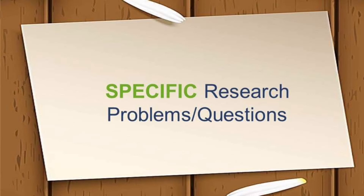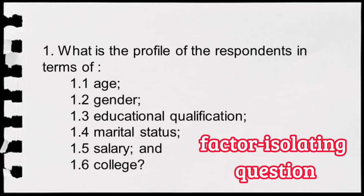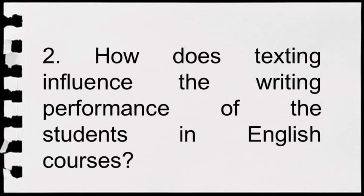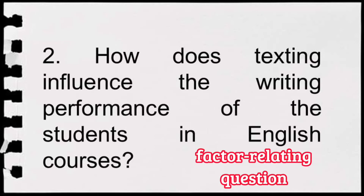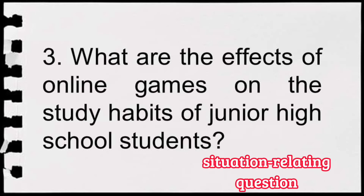So our specific questions are written in the following manner. What is the profile of the respondents in terms of: 1.1 Age, 1.2 Gender, 1.3 Educational Qualification, 1.4 Marital Status, 1.5 Salary, and 1.6 College? This is called a factor-isolating question. 'How does texting influence the writing performance of students in English courses?' — this is an example of a factor-relating question. 'What are the effects of online games on the study habits of junior high school students?' — this is an example of a situation-relating question.